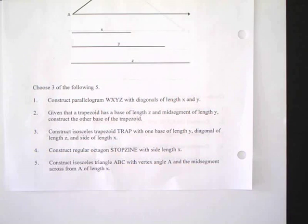Number 5. Construct isosceles triangle ABC with vertex angle A and the mid-segment across from A of length X.